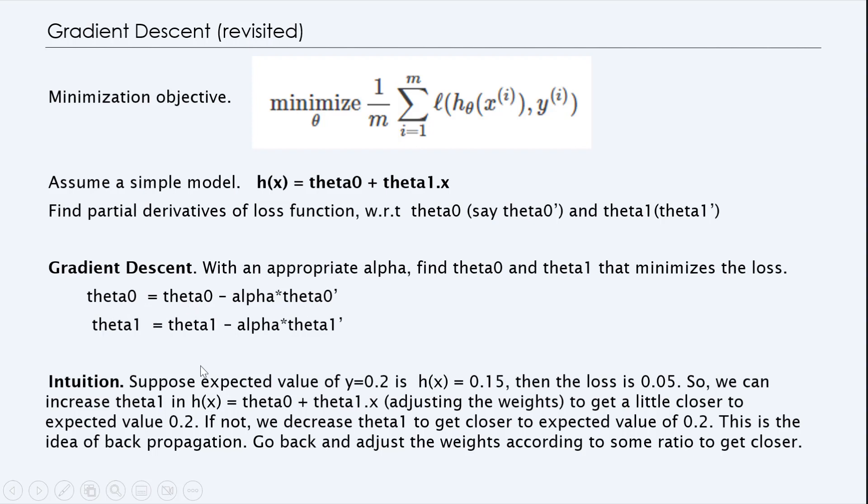So just to get an intuition, we can think like this. Suppose the expected value of y is 0.2, but our hypothesis gave 0.15. So therefore the loss is 0.05. So what we can do is we can increase the theta_1 in h(x) by adjusting the weights. Theta_1 is the weight, or theta_0 is the weight. So in order to increase that, we can work with the bias here. So we can adjust this weight here to get a little closer to the expected value of 0.2.